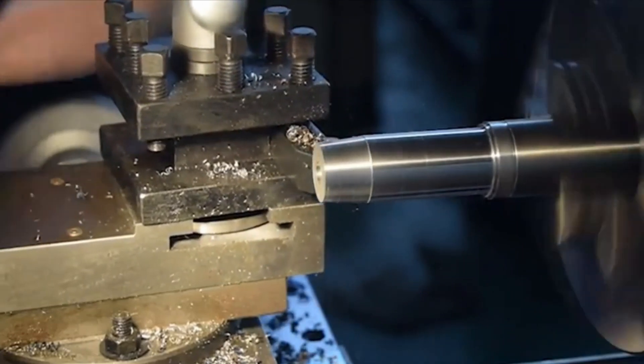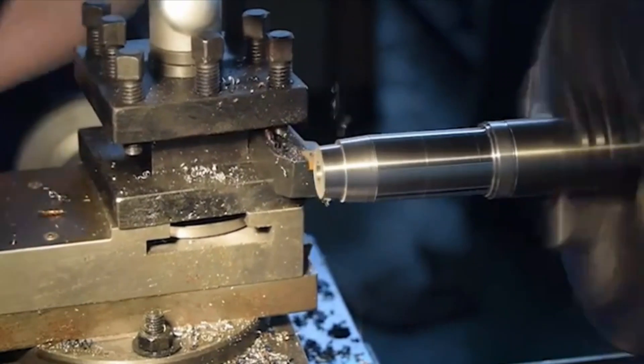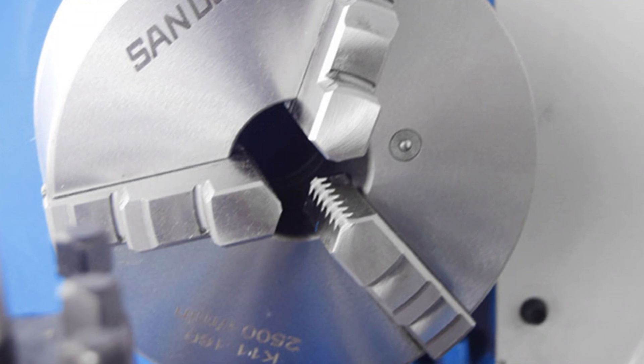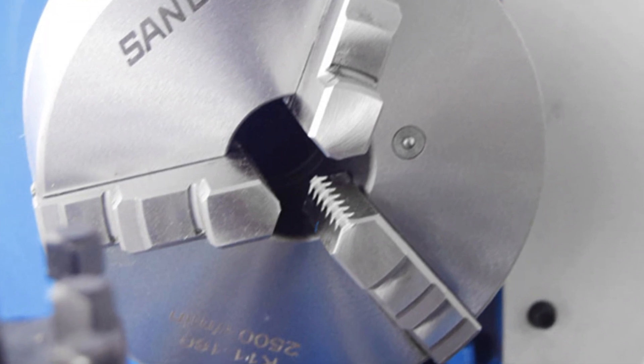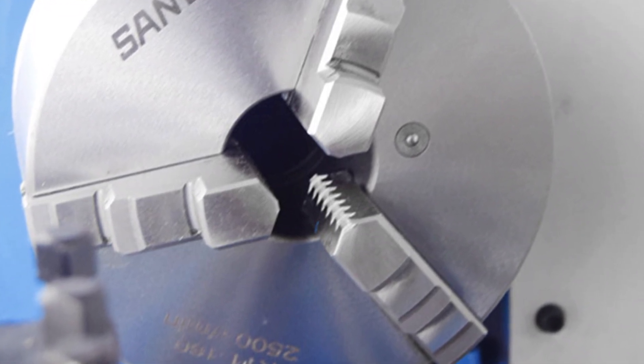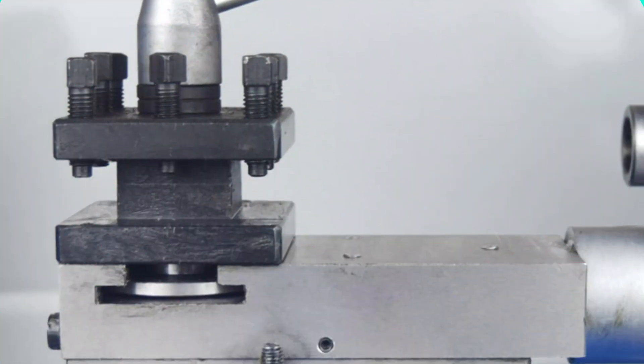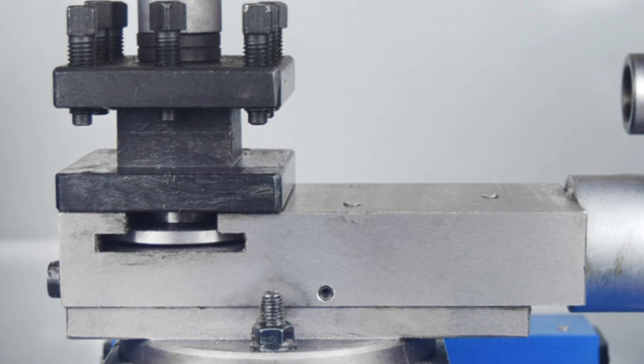The lathe's user-friendly design allows for easy operation, with a maximum lateral travel of 140mm, and a small knife holder with a maximum longitudinal stroke of 75mm. It also has 18 metric thread types and a pitch range of 0.25 to 3.5mm, making thread processing a breeze.